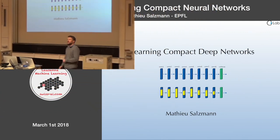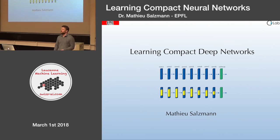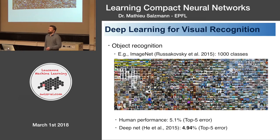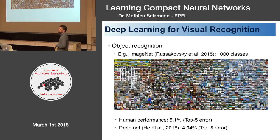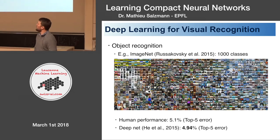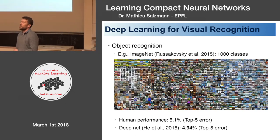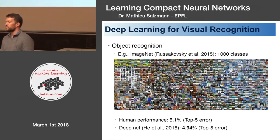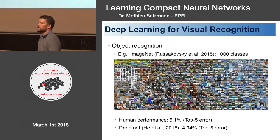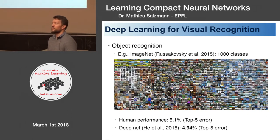What I'm going to talk about today is more machine learning than really visual recognition, but it's machine learning applied to visual recognition — it's about deep learning and how we can learn compact deep networks. Deep learning in the past few years has made a huge impact in visual recognition. On the task of object recognition, here what I'm showing is a subset of the large dataset ImageNet. It's got millions of examples of images, each associated with one class label, and there are a thousand classes in the challenge.